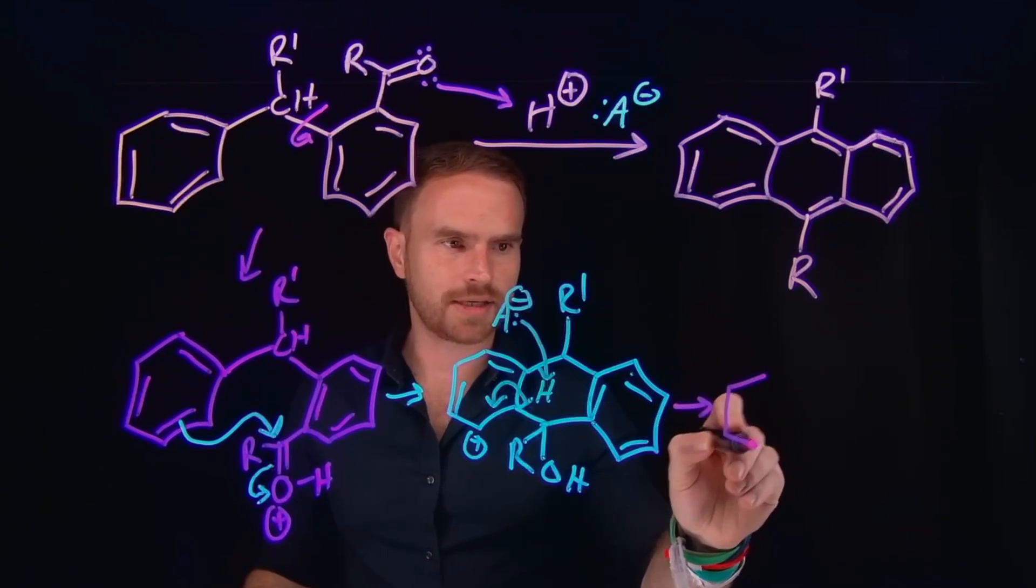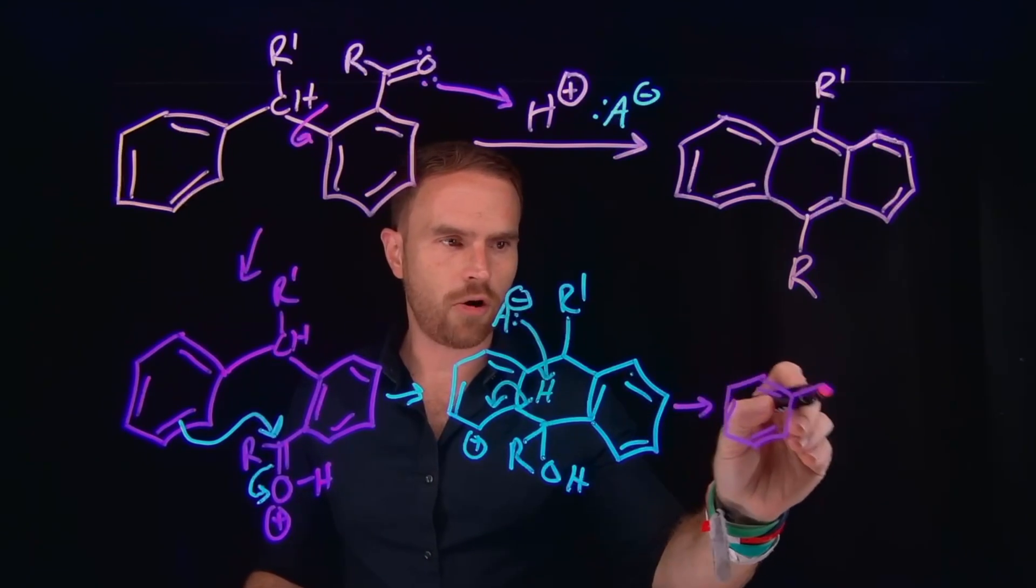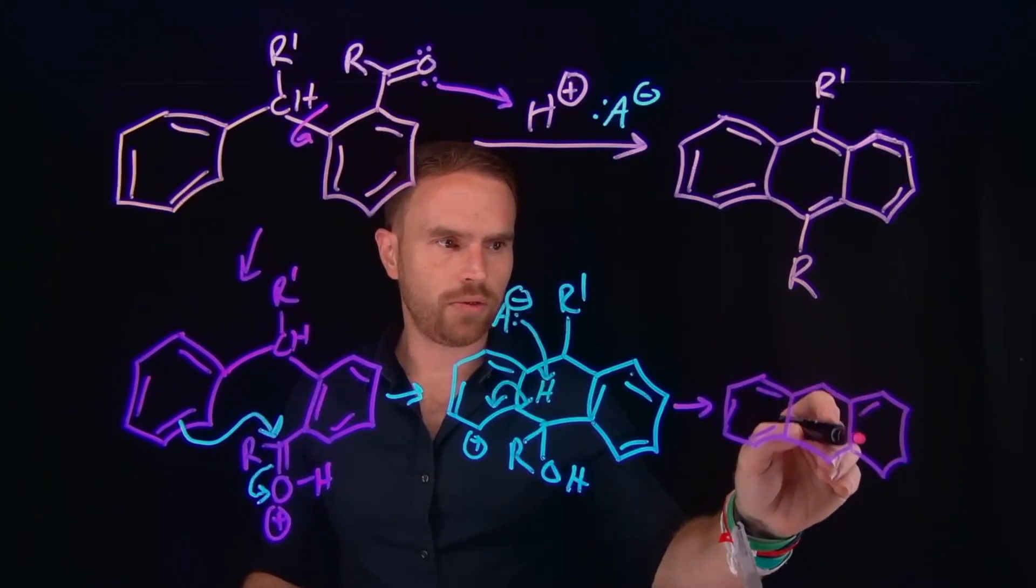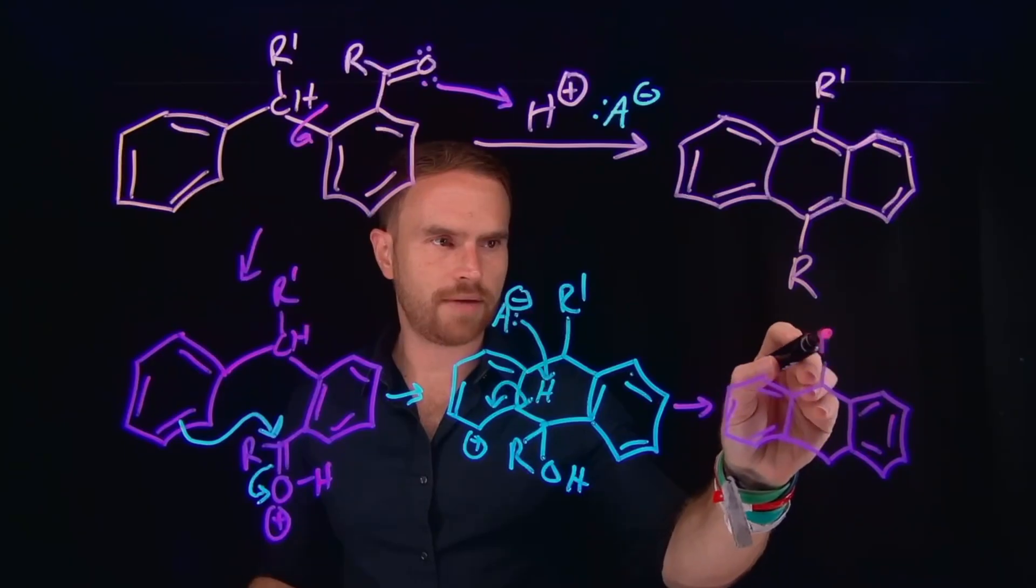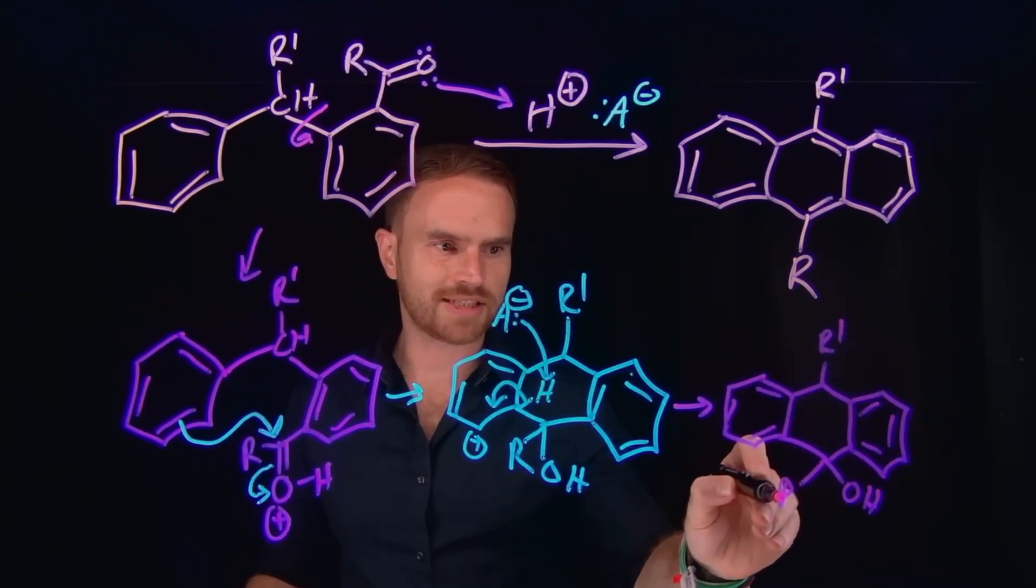So then the product of that transformation is going to contain all three rings. The one on the left and the right are already going to be aromatic, where we still have all the pi bonds located inside of them. Here we have the R prime group, here we have our OH group, and here we have the second R group.